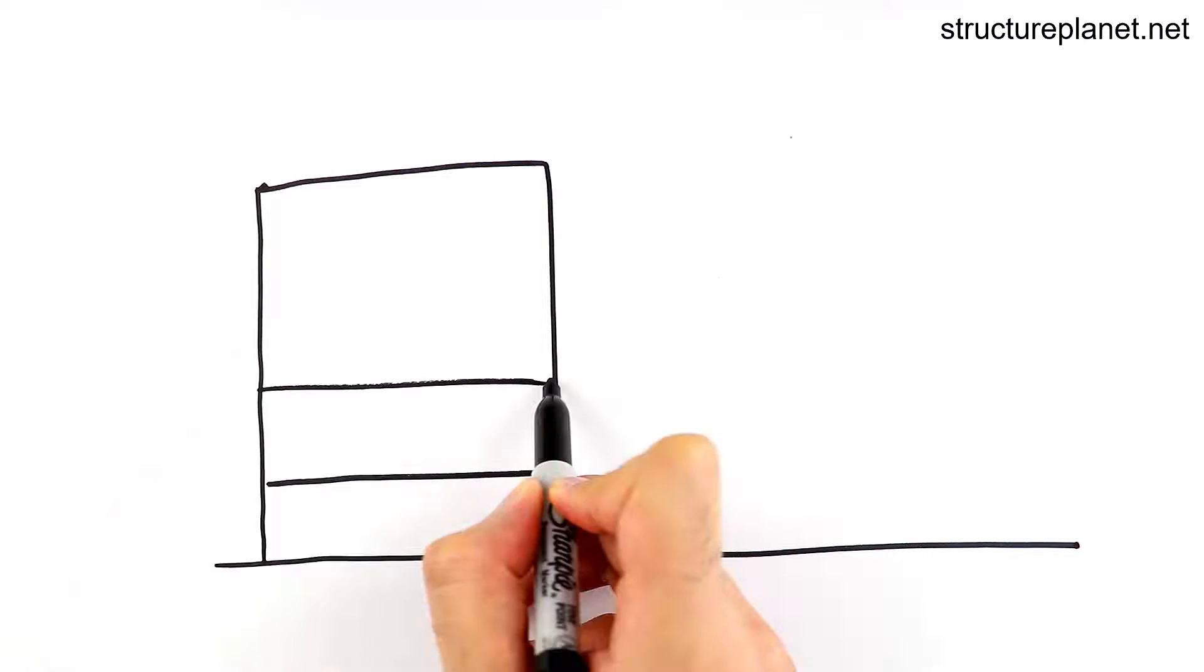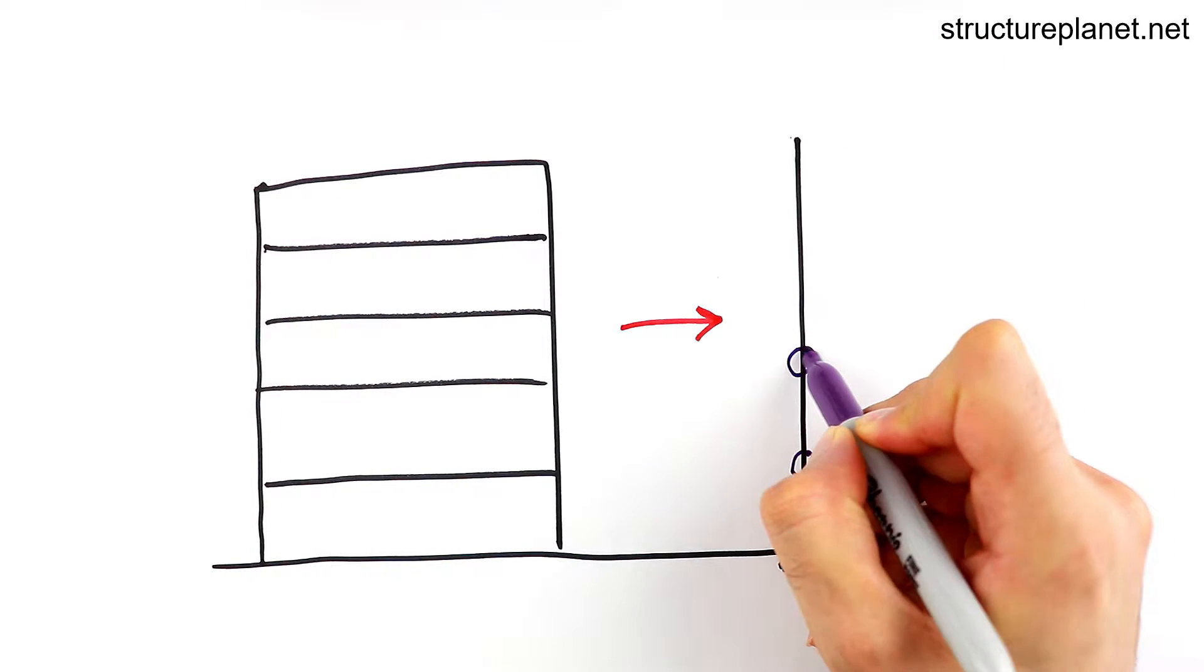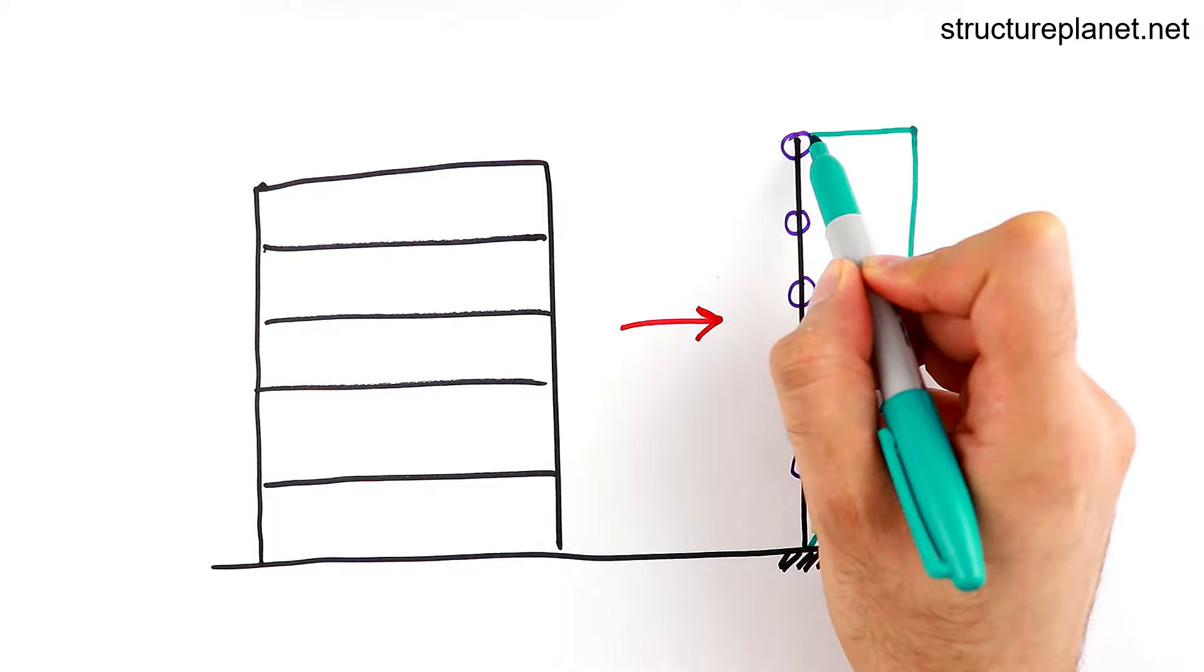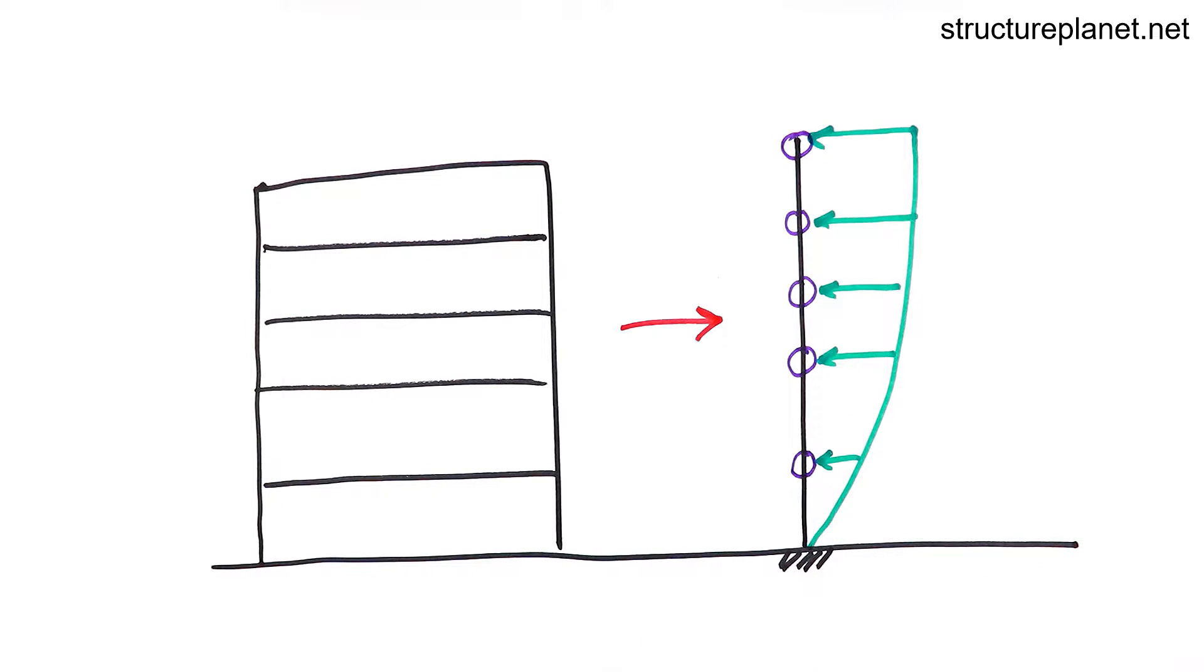Now let's idealize a building as a vertical cantilever that is fixed at the ground and each story's mass and gravity loads are shown as individual circles. We can also show some lateral loads as forces that apply to each story. These loads can be wind pressure or seismic forces.